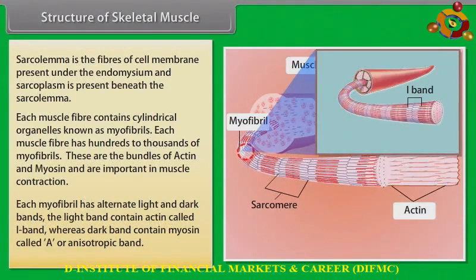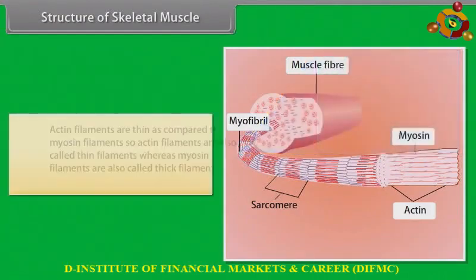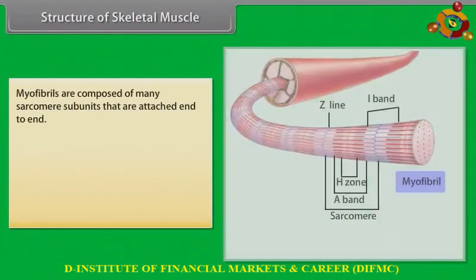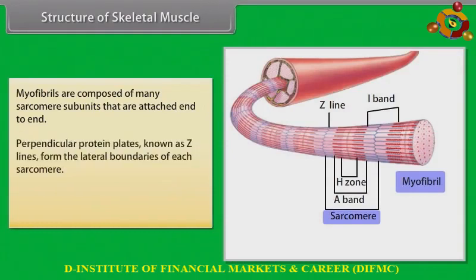Each myofibril has alternate light and dark bands. The light bands contain actin called I-band, whereas the dark band contains myosin called the A-band or anisotropic band. Actin filaments are thinner compared to myosin filaments, so actin filaments are also called thin filaments, whereas myosin filaments are also called thick filaments. Myofibrils are composed of many sarcomere subunits attached end to end.